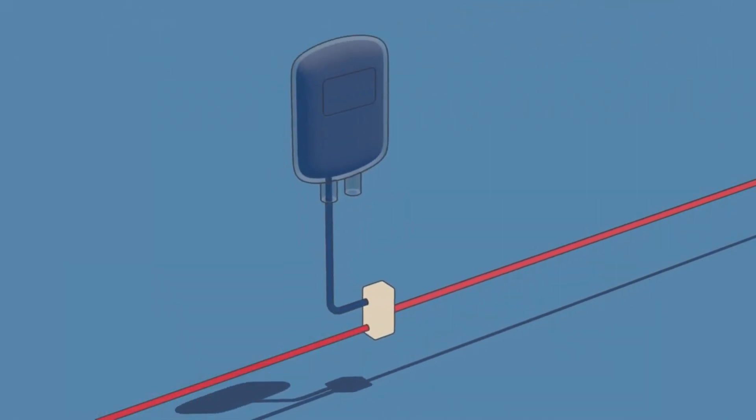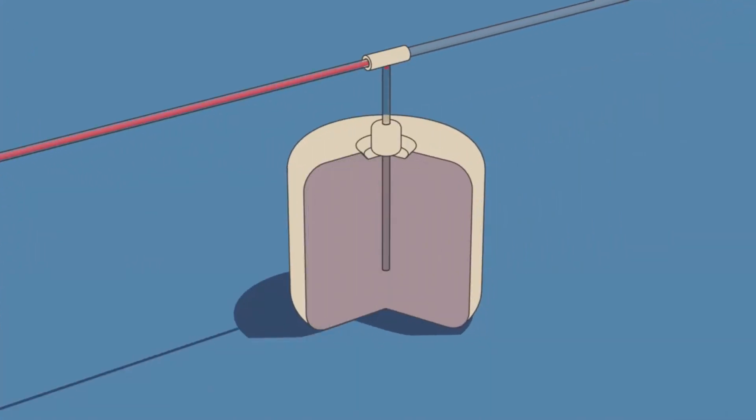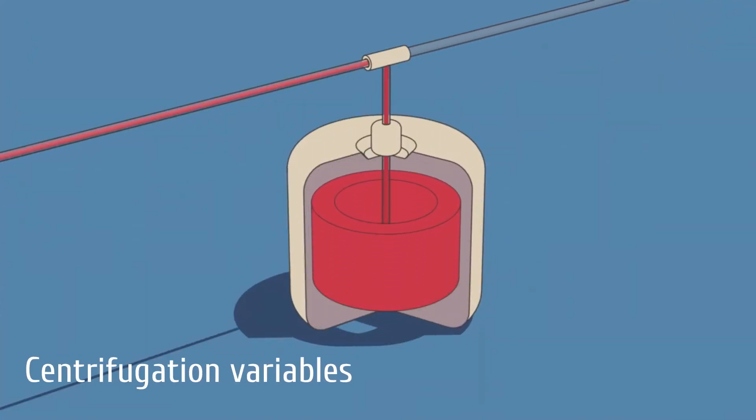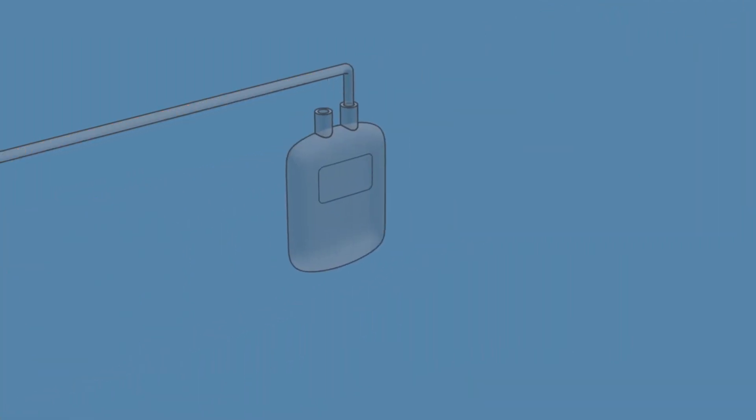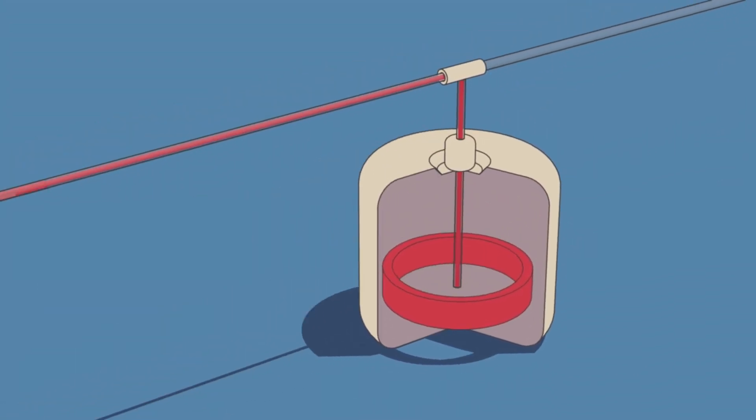The centrifugation process itself has four variables that can be controlled to selectively remove the desired components. The first is spin speed and bowl diameter. The second is sit time in centrifuge. The third is solutes added. And the fourth is not as easily controllable: plasma volume and cellular content of the donor.